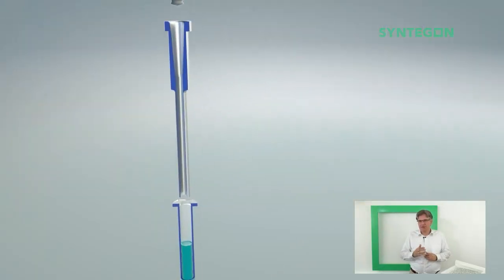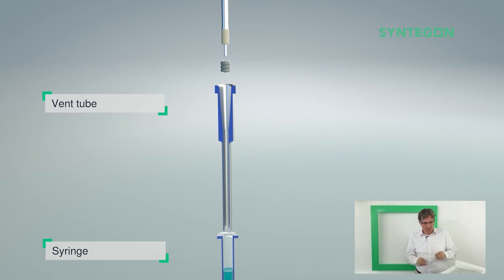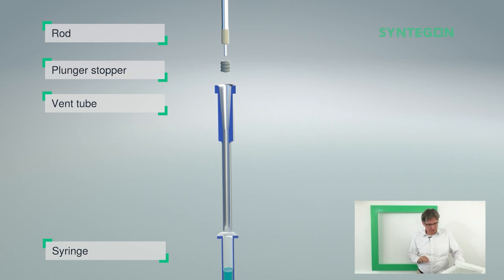Here you see four elements and I have them also here. You see the syringe itself, you see the vent tube, the stopper itself and the plunger rod to push the stopper into the vent tube.